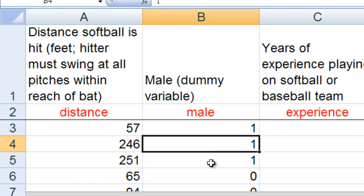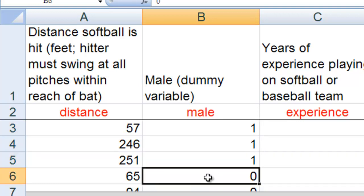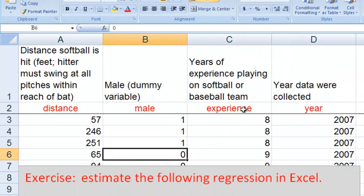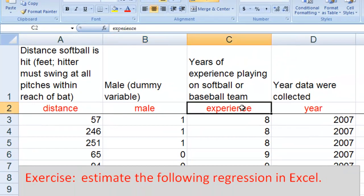so the first three hitters here are male, and zero if the hitter is a female, so this fourth hitter here is a female because male dummy variable equals zero.